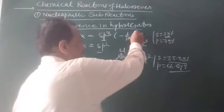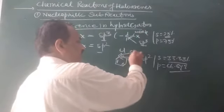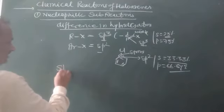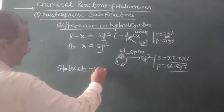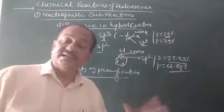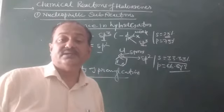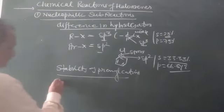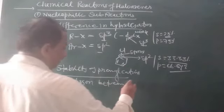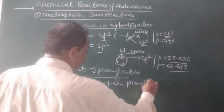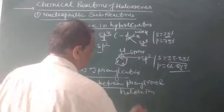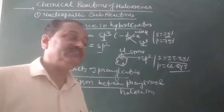So the C-X bond in haloalkanes (sp3) is weaker, while in haloarenes (sp2) it is stronger. The next point is the stability of the phenyl cation. The phenyl cation is more stable than a simple carbocation, so it cannot easily participate in nucleophilic substitution. Additionally, there is repulsion between the pi electrons of the phenyl ring and the incoming nucleophile (halide ion), which further prevents easy nucleophilic substitution.